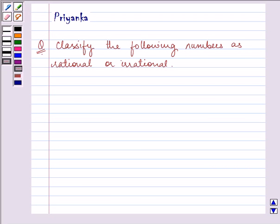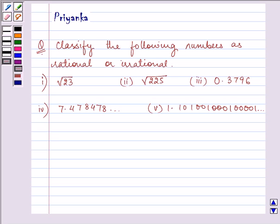Hi, and how are you all today? I am Priyanka, and let us classify the following numbers as rational or irrational. These are the five parts which are given to us in the question.